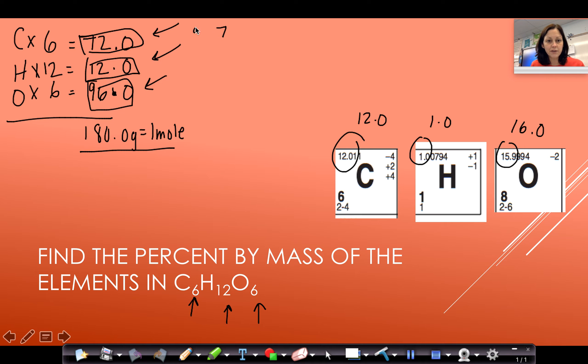So if I want the percent of carbon in glucose, which is C6H12O6, my percent is going to be 72.0 over 180.0 times 100. And that's going to give me my percent by mass of carbon in this compound. So I'm going to do 72 divided by 180 on my calculator and multiply by 100. And that means that my percent of carbon is 40%.